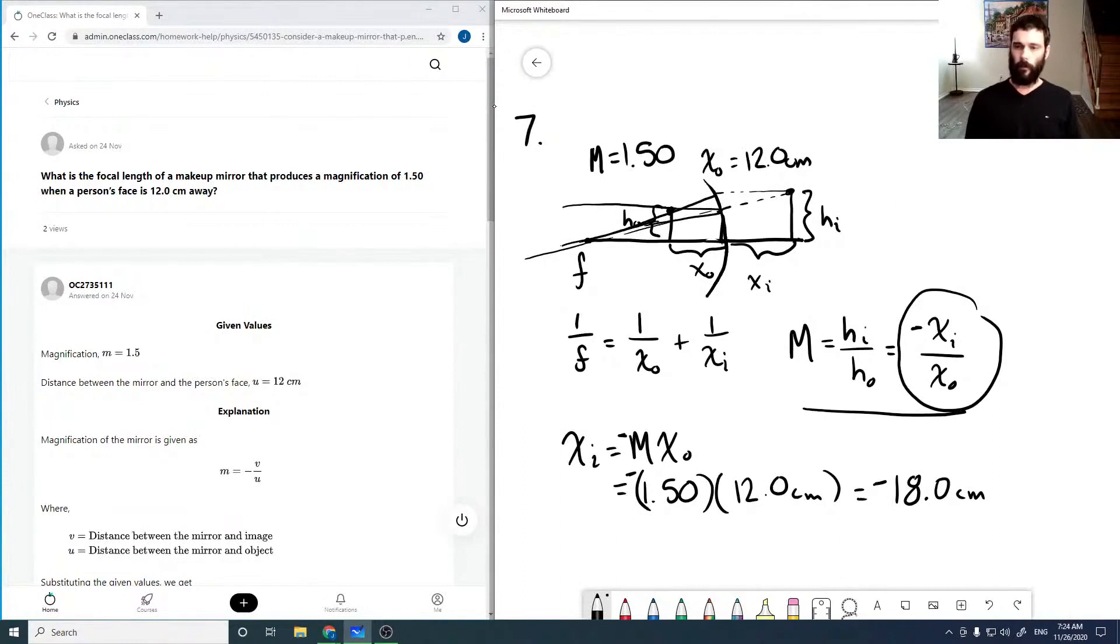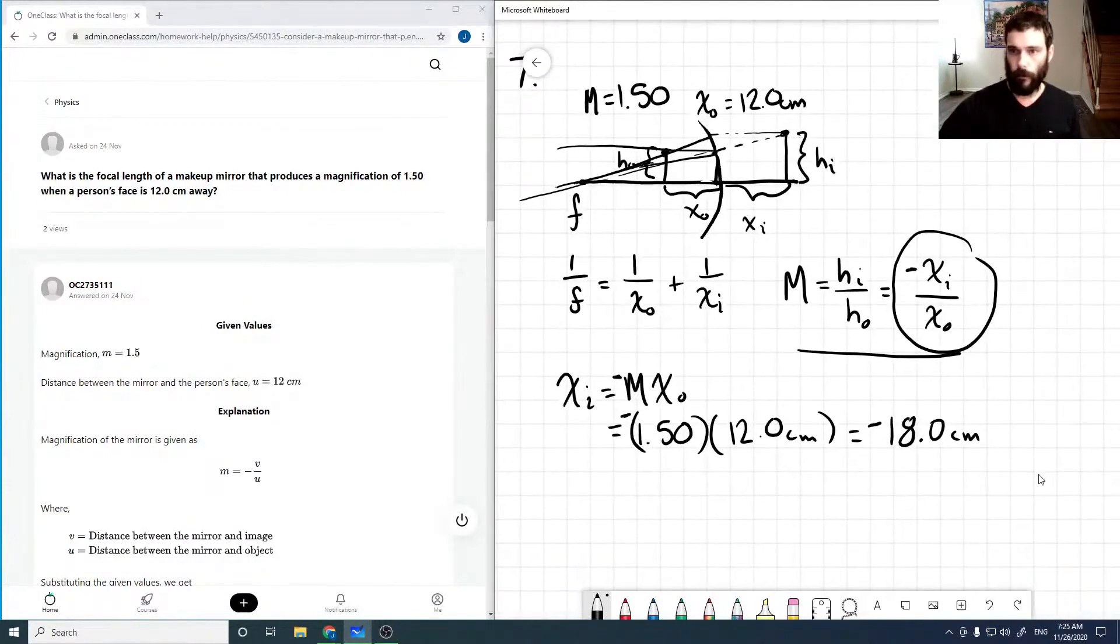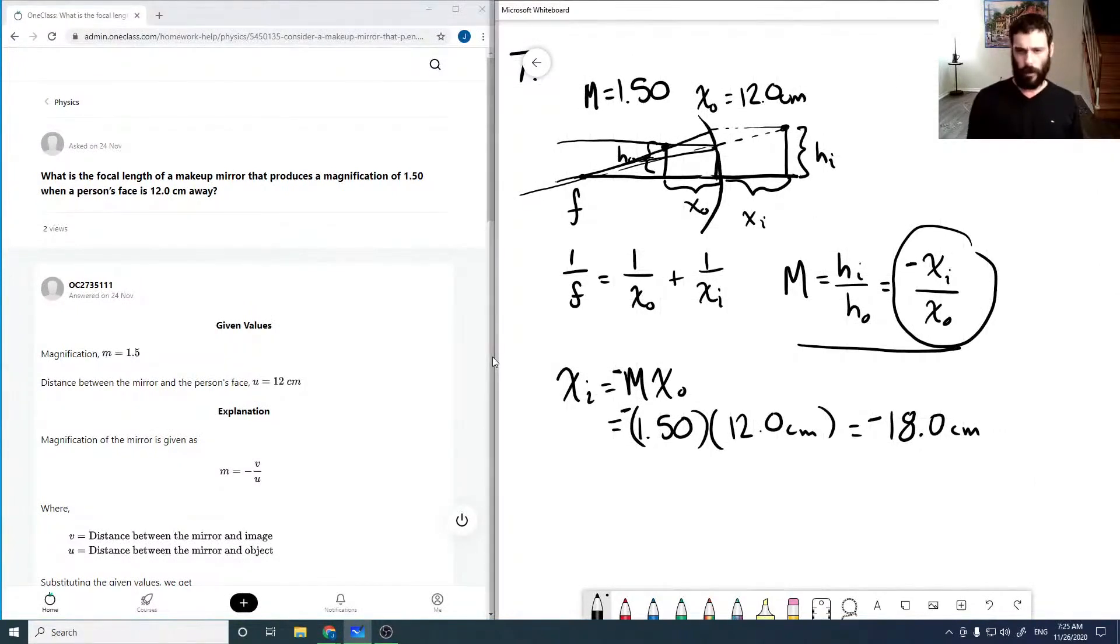And then we can use this value in our focal length expression. So 1 over f is 1 over x_o, so 12.0 centimeters, plus 1 over minus 18 centimeters.